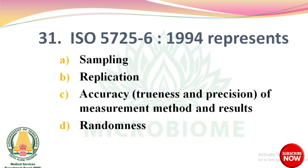Next question: ISO 5725-6-1994 represents — options: sampling, replication, accuracy trueness and precision of measurement methods and results, randomness. The right answer is option C: accuracy, trueness and precision of measurement methods and results.